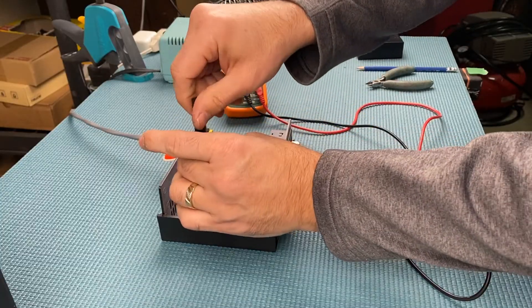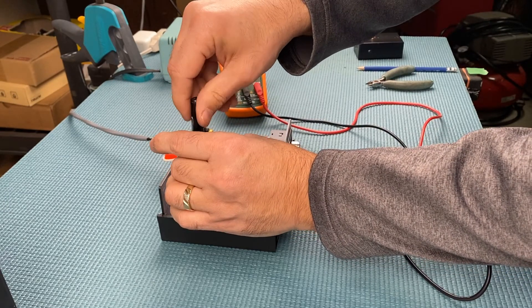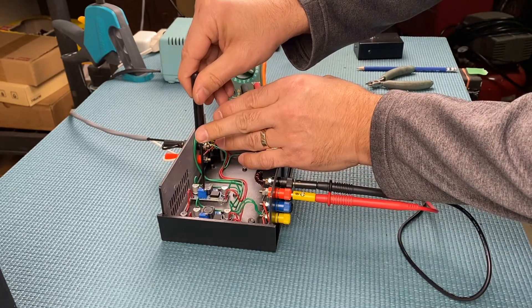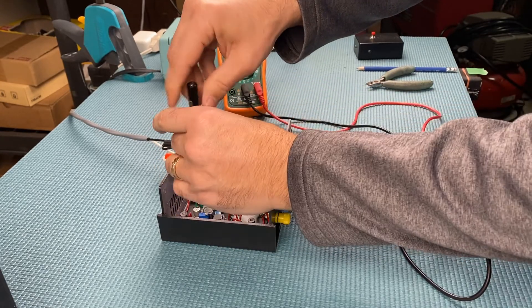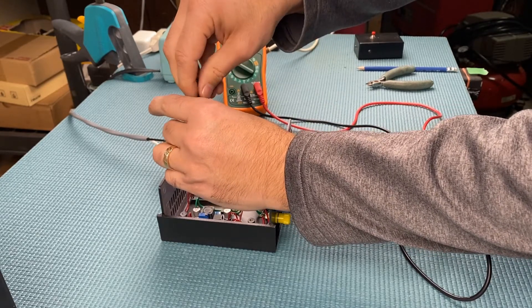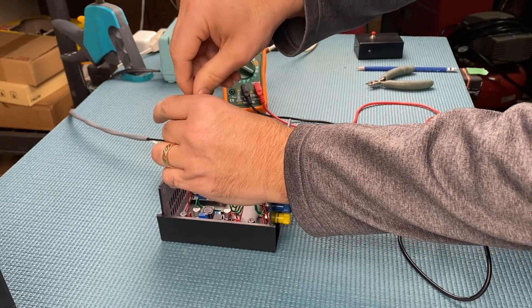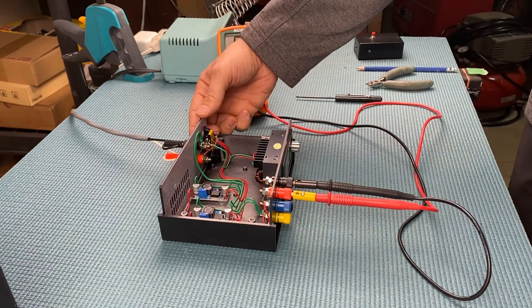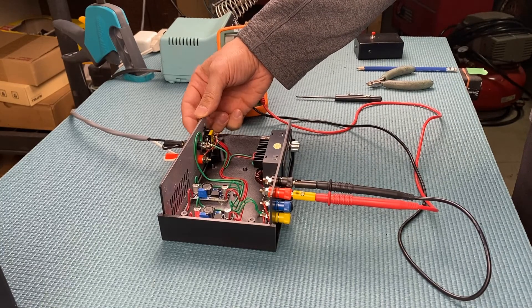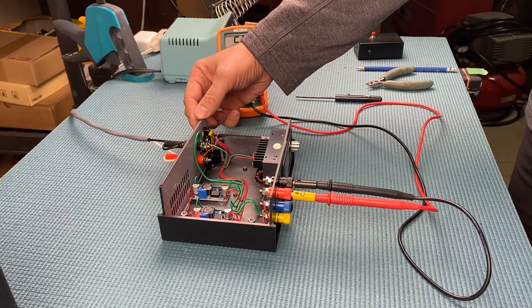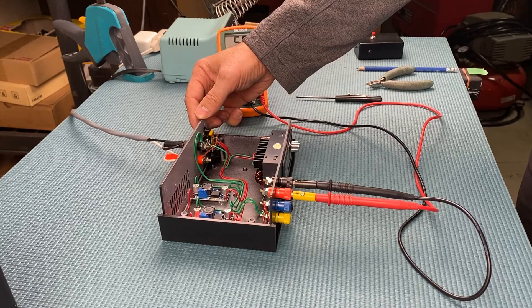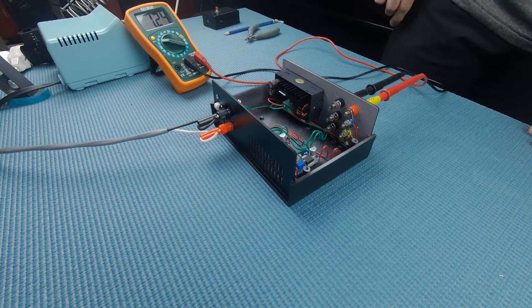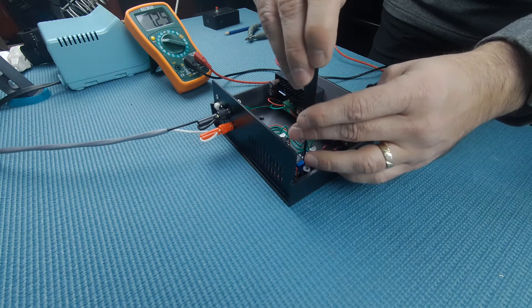Before applying power, I'm going to turn the potentiometer of the small converters to their lowest position. Let's apply the power and see if any smoke comes out. The potentiometer can be adjusted from 1.25 volts to 30 volts.